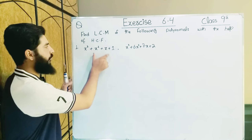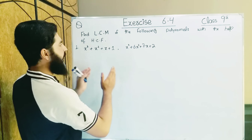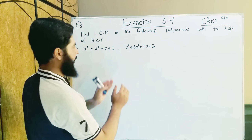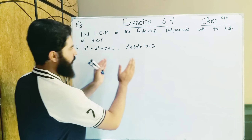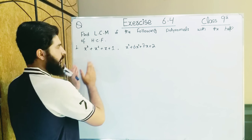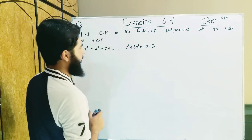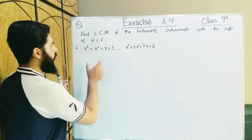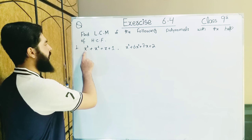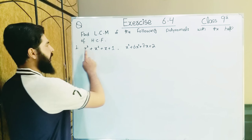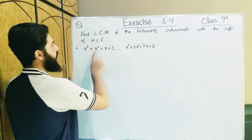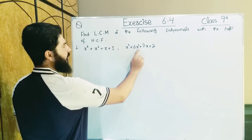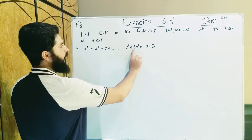First of all, we have two values: one big and one small. The small ones are kept outside and the big ones are inside. The small ones are divided by the big ones. The first value is x³ and x³. The second value is x² and x², but here there is a 6. So the second value is bigger.